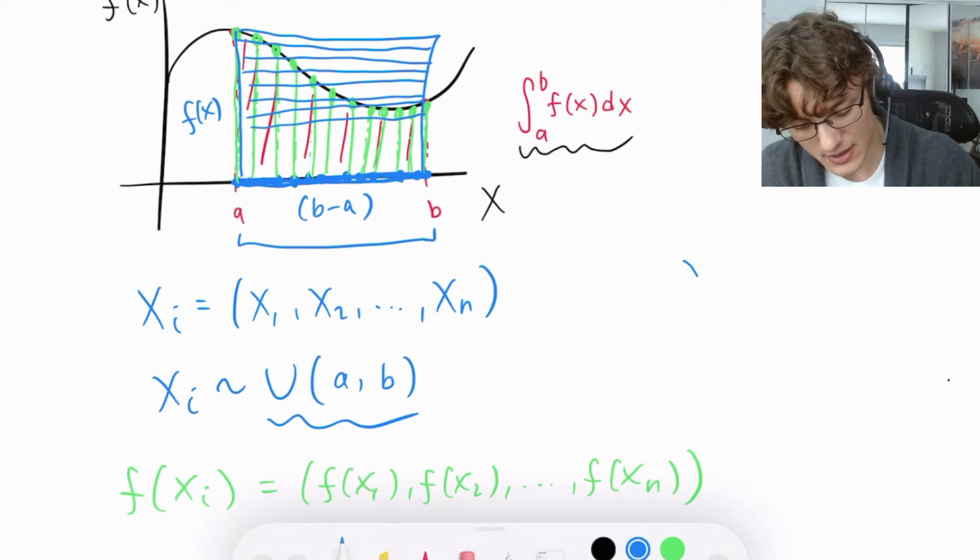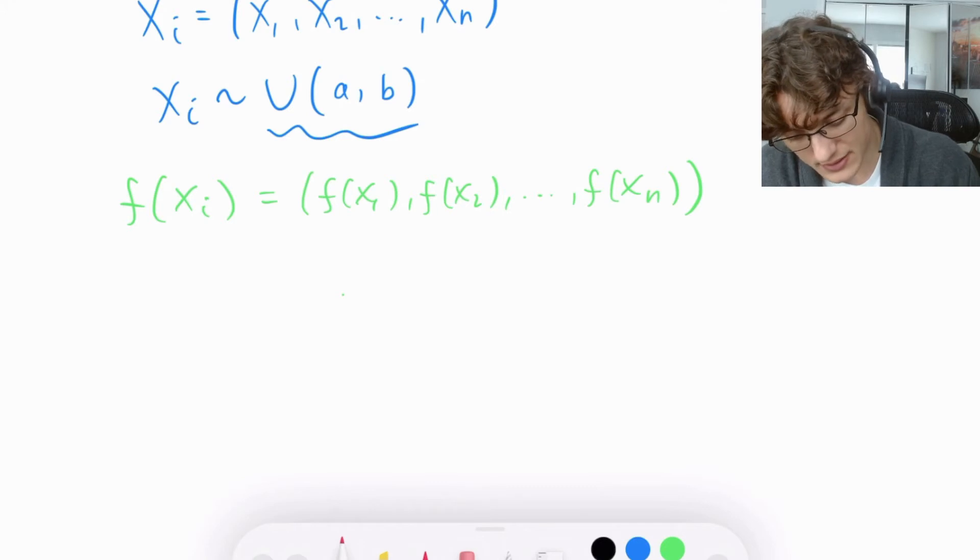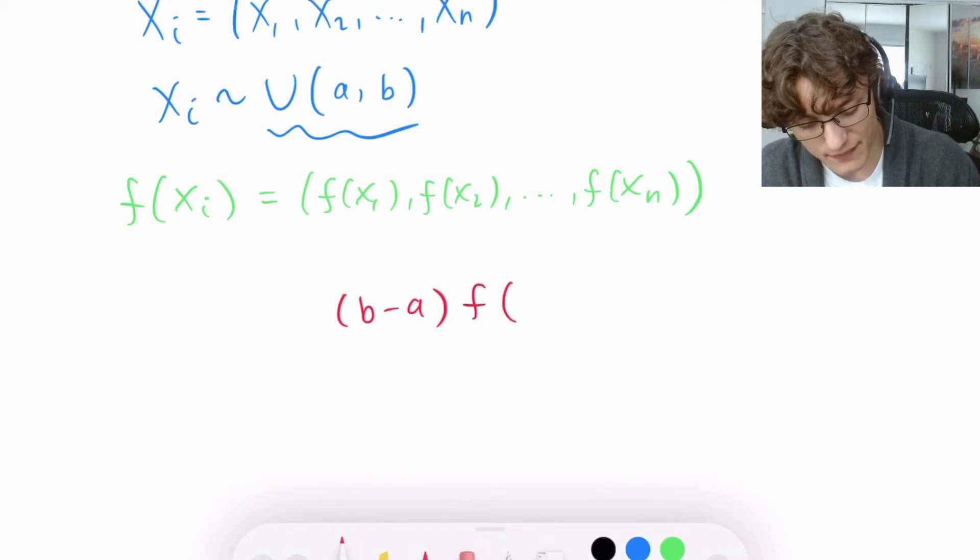It's always going to be b minus a. That's this length here. So mathematically, we can say that the area of each of these rectangles abstractly is going to be (b - a) times f(x).